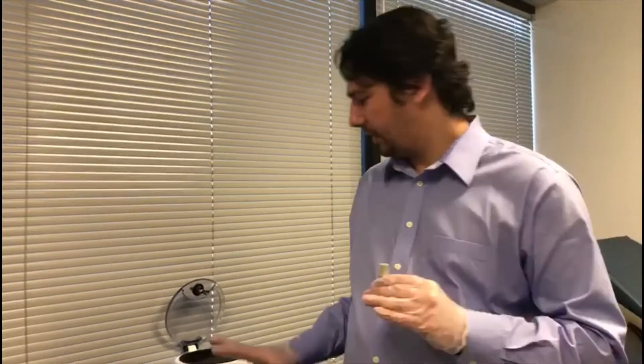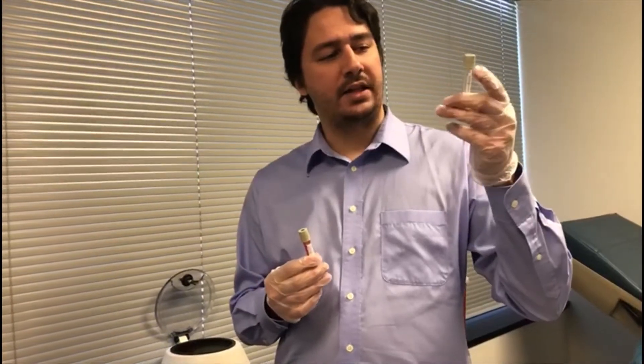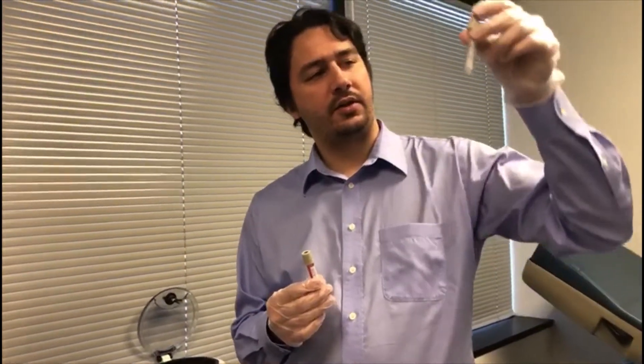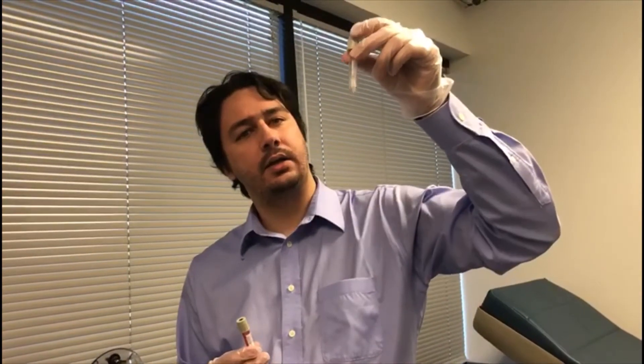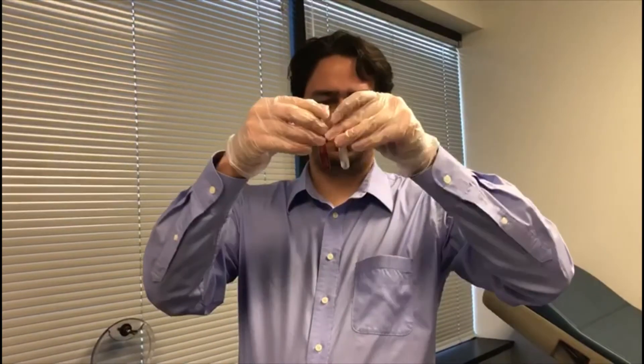So when you're using the centrifuge, you need to make sure that it is balanced. Since we only have one tube of blood, I went and made a balanced tube. If you look, there is a nice little liquid in there. All it is is water, plain tap water filled up roughly equal amounts to make sure that it is balanced.